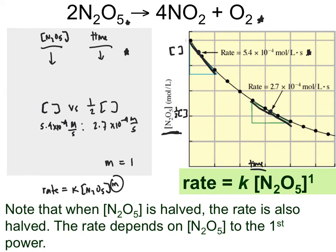Because there is a direct relationship between concentration and rate, we know that the exponential value associated with our rate law is going to be equal to 1. If we double the concentration, we double the rate. So our rate law goes from generic to a specific rate law that is first order overall, and because there's only one reactant, it's first order with respect to N2O5. This is an inspection method — it's not the easiest, but it is an option.